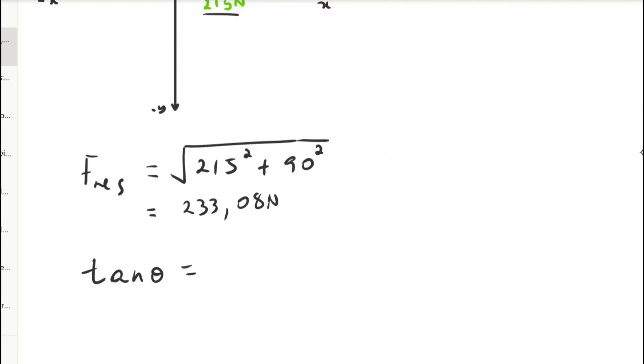Tan theta is equal to 90 divided by 215. Now we need to get the size of the angle theta. This is going to be calculated as tan inverse of 90 over 215.